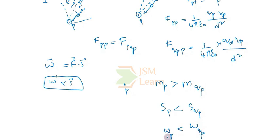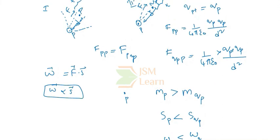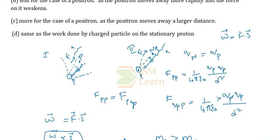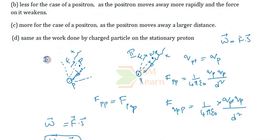When we compare with our options, option C is correct — the work done is greater for the positron because the positron moves a larger distance, since it is lighter and has less mass.